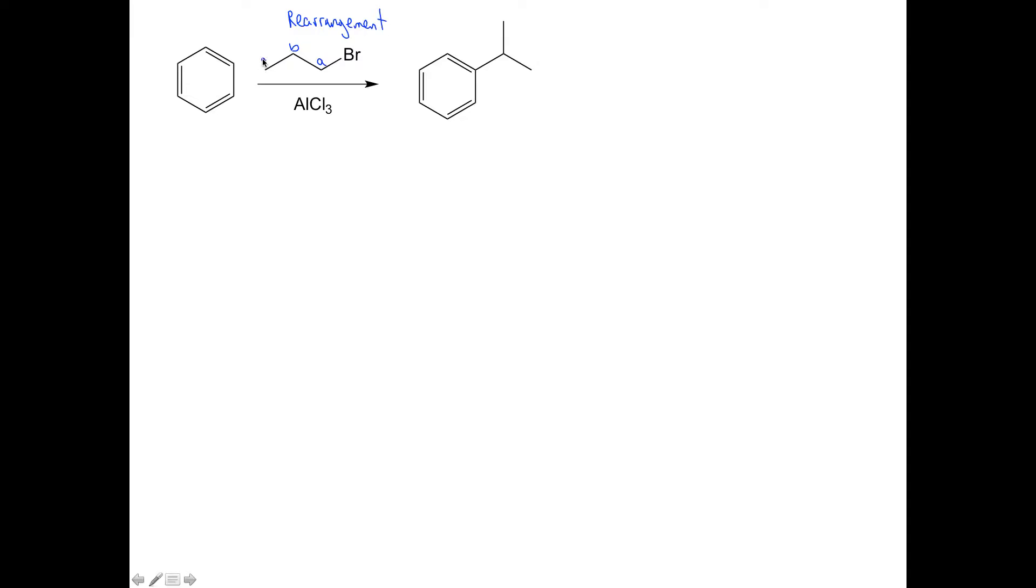So if we look, we can tell we have a rearrangement because here's carbons A, B, and C, but instead of having my aromatic ring connected to carbon A, it is in fact connected to carbon B. So here's A, B, C.